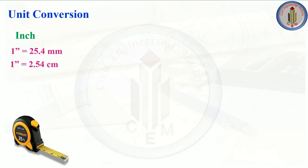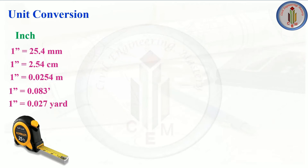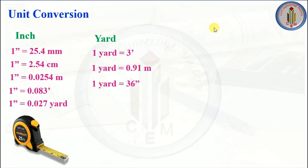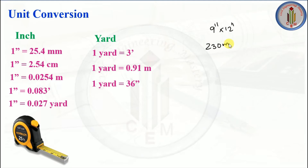1 inch equals 25.4 mm, 2.54 cm, 0.0254 meter, 0.083 feet, and 0.027 yard. For example, a column size of 9 inch × 12 inch converted to millimeters: 9 × 25.4 ≈ 230 mm and 12 × 25.4 = 300 mm.